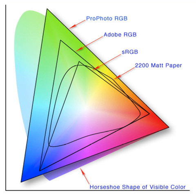A color space may be arbitrary, with particular colors assigned to a set of physical color swatches and corresponding assigned color names or numbers, such as with the Pantone collection, or structured mathematically as with the NCS system, Adobe RGB and sRGB.